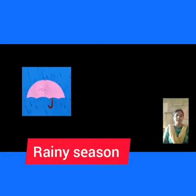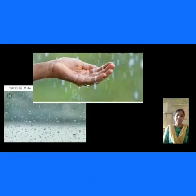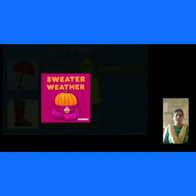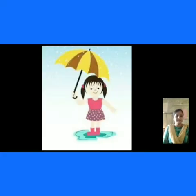First is the rainy season. The climate condition is very cool in the rainy season. What type of dress can you wear in the rainy season? We can wear raincoats and jackets. We also see colorful umbrellas in the rainy season.